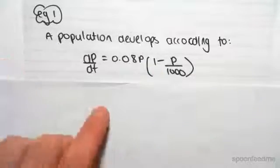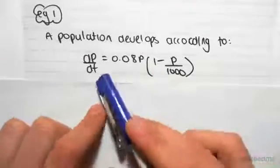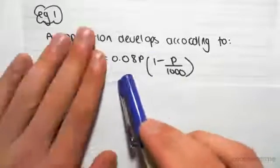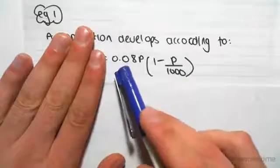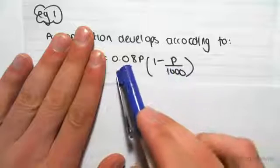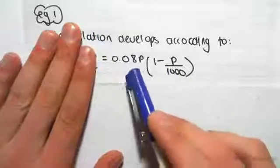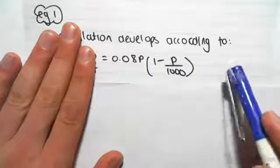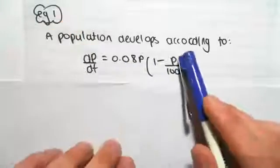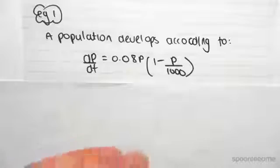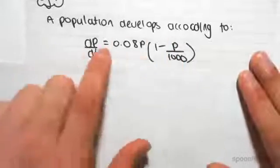In a question, you might not be given the differential equation in this form. You might have it in an expanded form, like 0.08p minus 0.08 divided by 1000 times p squared. So it might be something p minus something p squared. You'd have to factorize it to get it into a form like this so that we can start deconstructing it. You always have to get it in this form.